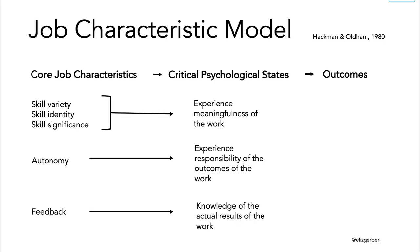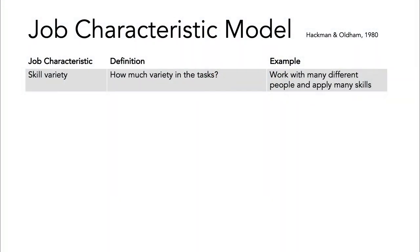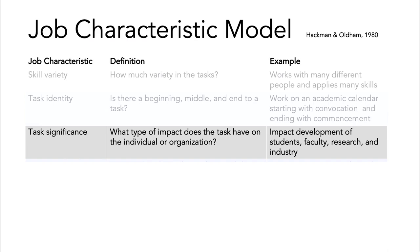As a professor: skill variety is high — I work with many people and apply many skills. Task identity: yes, I work on the academic calendar from convocation to commencement. Significance: I'm lucky to impact students and faculty. Autonomy: I design my own curriculum and talks. Feedback: my lab has been really interested in this last one — there's a lot of information in the world but not a lot of great feedback.